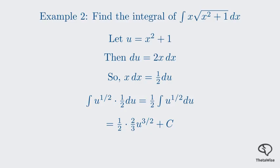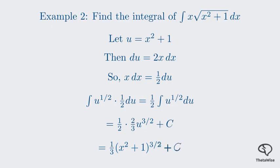The last step is to substitute x² + 1 back in for u. Our final answer is (1/3)(x² + 1)^(3/2) + C. The trick was recognizing the u-substitution pattern.